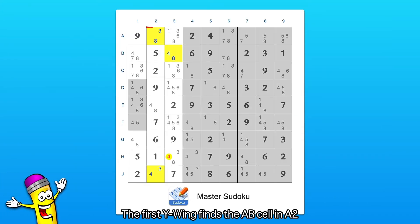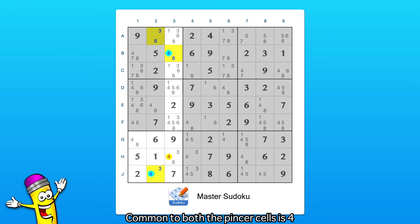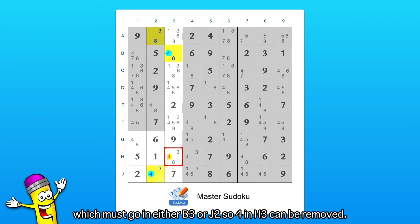Now let's look at this puzzle. The first Y-wing finds the A, B cell in E2, which links 8 with the pair on B3 and the 3 in J2. Common to both the pincer cells is 4, which must go in either B3 or J2, so 4 in H3 can be removed.